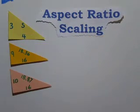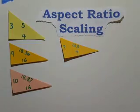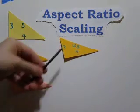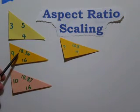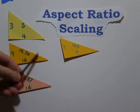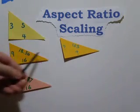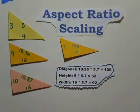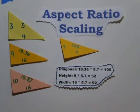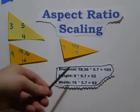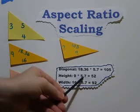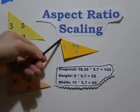Let's try another example with 16 by 9. Let's say my diagonal dimension is 105 units long. I take 105 divided by 18.36 — this is my 16 by 9 aspect ratio template value. 105 divided by 18.36 equals 5.7. I can now carry this scale factor through to the other dimensions, which are the height and width. So I know that my desired screen is 5.7 times larger than this template. 9 times 5.7 equals 52, so now I know the height of my screen.